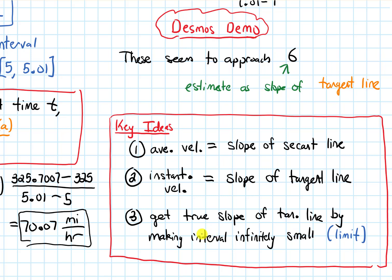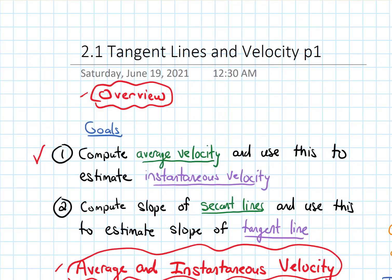And we'll really return to that idea of getting the slope of the tangent line in section 2.7 and 2.8. But first, we'll build this framework of a limit. Alright, in terms of our goals, we finished the last goal for this section, talking about how we can use the slopes of secant lines to estimate the slope of a tangent line.